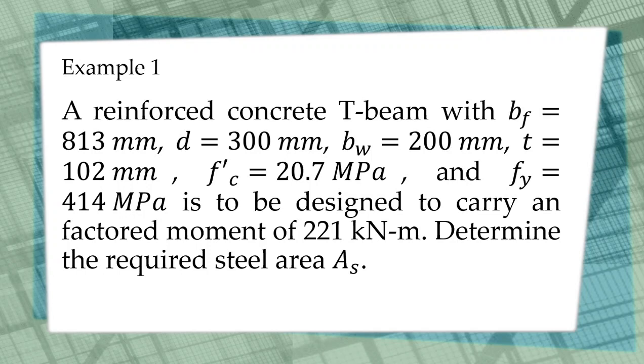This is to be designed to carry a factored moment of 221 kN-m. It means a factored moment of 221 kN-m is the ultimate moment the beam, this T-beam, must carry. So determine the required steel area, the area of steel reinforcement.